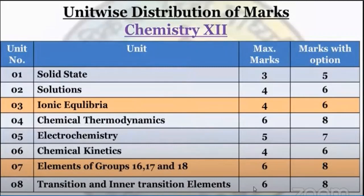Chapter 5: Electrochemistry — maximum marks 5, along with option 7. Chapter 6: Chemical Kinetics — maximum marks 4, along with option 6. Chapter 7: Elements of Group 16, 17 and 18 — maximum marks 6, along with option 8. Chapter 8: Transition and Inner Transition Elements — maximum marks 6, marks with option 8.